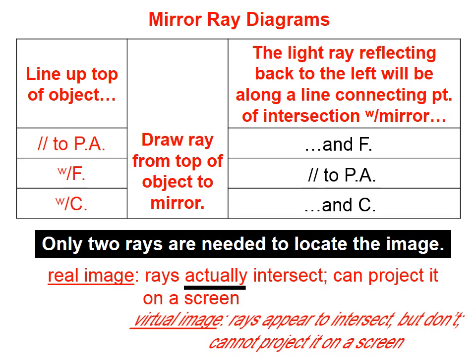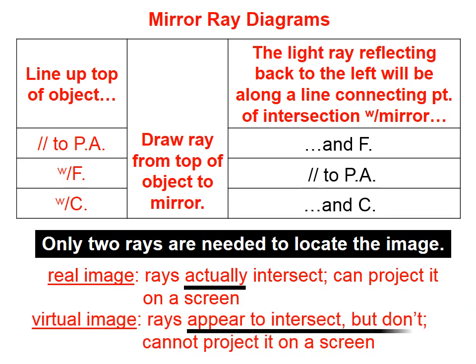Let's define what we mean by a real compared to a virtual image. A real image is one in which the rays really intersect — they actually intersect. That's why they call it a real image; you can project a real image onto a screen. With a virtual image, the reflected rays appear to intersect but they don't in real life, so you can't project it on a screen.